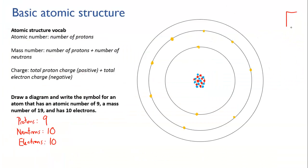So we're going to write down its symbol, with the atomic number at the bottom left — we already know that's 9. And we need to put the mass number at the top left. The most common mistake that people make is to think that the mass number is just the number of neutrons, and they would put 10.